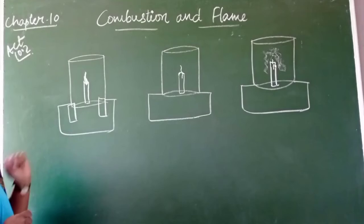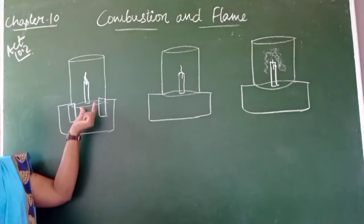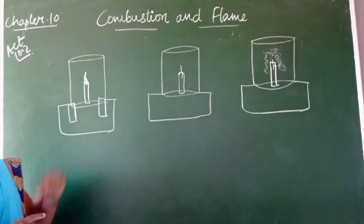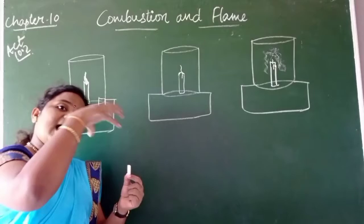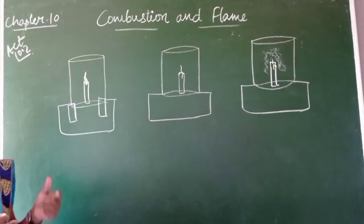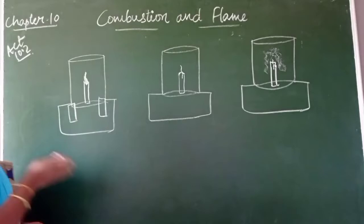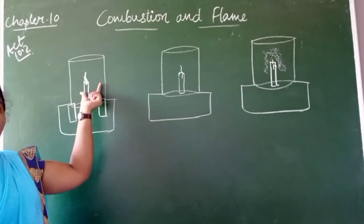First, we light a candle and place it on a table with wooden blocks. Then we invert a glass chimney over the candle. The wooden blocks at the bottom help supply oxygen, which is essential for burning the candle. With air passing through the chimney via the wooden blocks, the candle starts burning smoothly without any disruption.